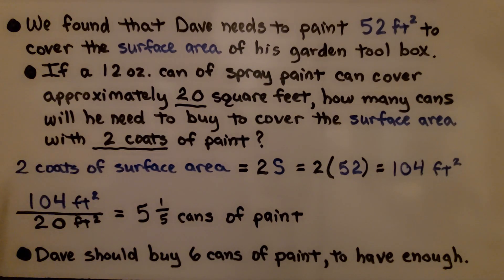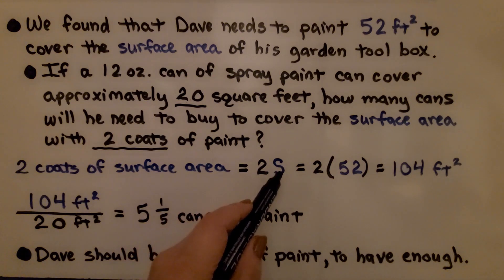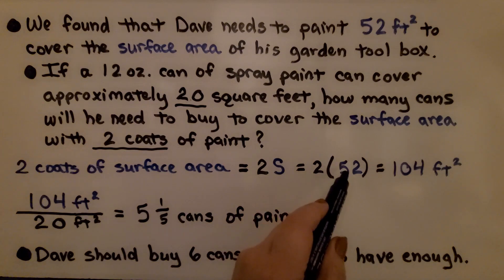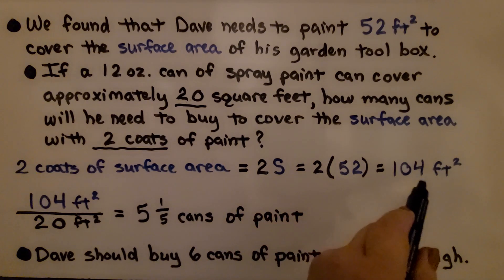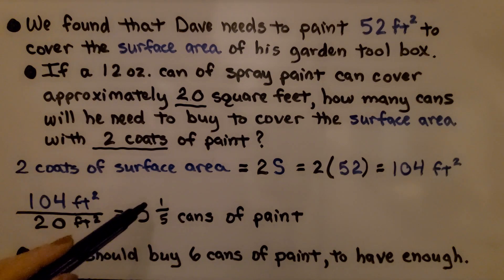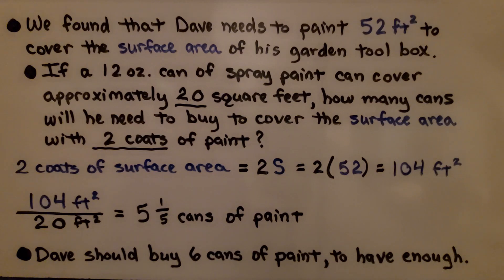Two coats of surface area equals 2S, 2 times the surface area. The surface area is 52, so we have 2 times 52, which equals 104 feet squared. If each can is 20, we divide 104 by 20 and get 5.2 cans of paint. He shouldn't buy 5 cans because there will still be a little bit that didn't get a second coat. We should round up to the next amount of cans. Dave should buy 6 cans of paint to have enough.